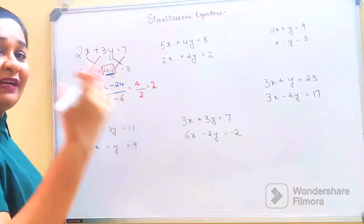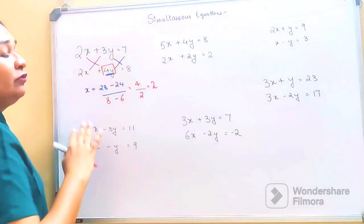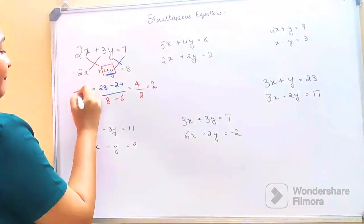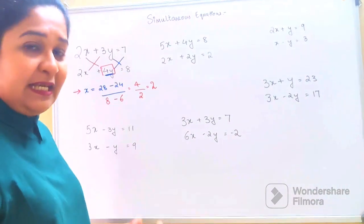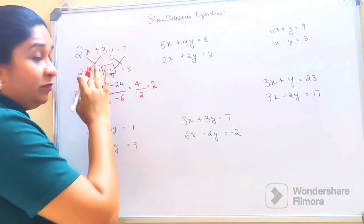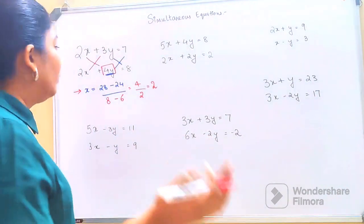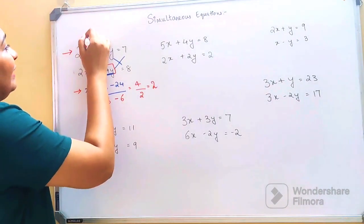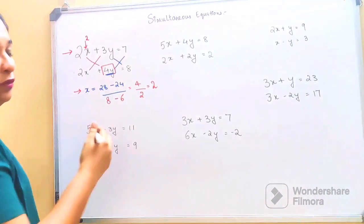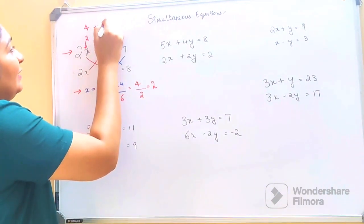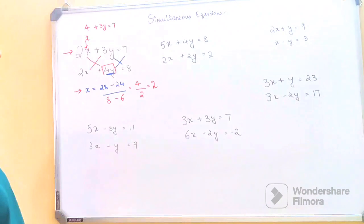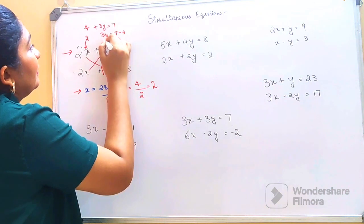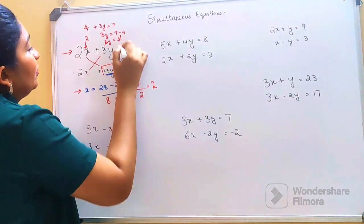In this method you can find the value of x. Now, finding y separately can get complicated, so it's best to always find x first, then substitute x into one of the given equations to find y. Let's substitute here — putting x as 2: 2 into 2 gets you 4, plus 3y equals 7. So 3y equals 7 minus 4, which gives 3.